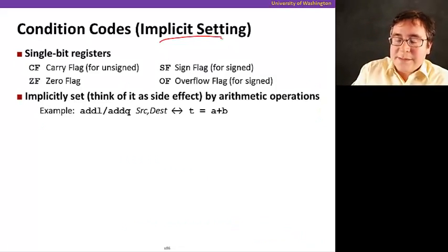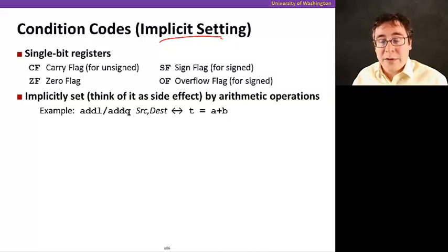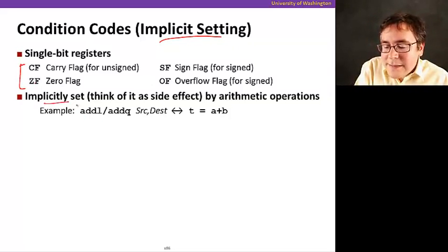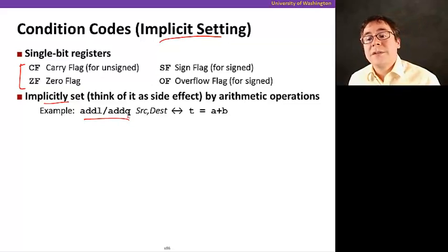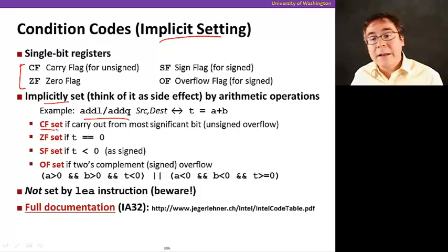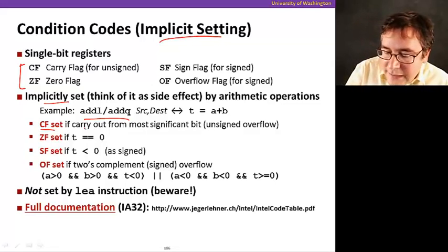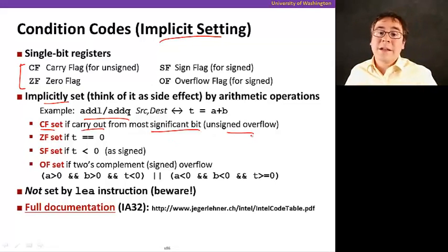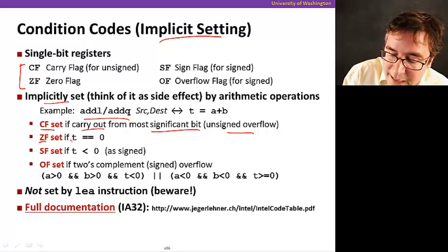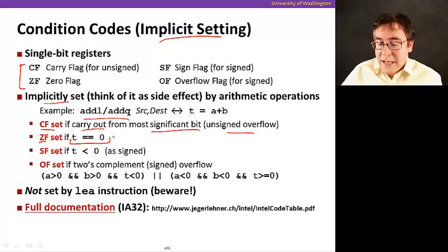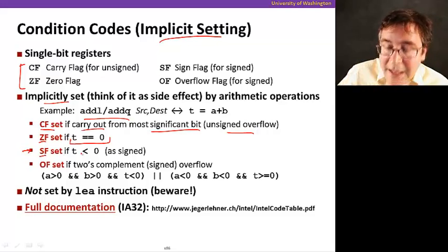Let's see now how these condition codes are set. The first way we're going to see is just implicit setting. It just happens implicitly when you carry out some operations. These are the single-bit condition registers that we're going to be talking about, and they are implicitly set when you execute some instructions, for example, an addition. So this instruction performs the arithmetic addition operation, but in addition to that, it also sets some condition codes depending on what happens to the result. For example, in the case of add, the CF is set if there's a carry out from the most significant bit, which is essentially an unsigned overflow happening in the addition.